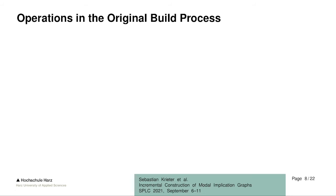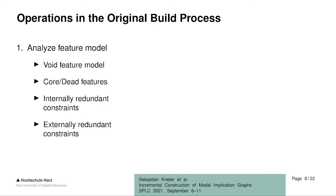To understand the incremental build process, we first look at the original build process. The first phase is analyzing the feature model for anomalies. We check whether the feature model is void, because a void feature model needs no graph since it has no solutions. Then we look at core and dead features, because core and dead features don't need to be represented in the graph since they only have one selection state.